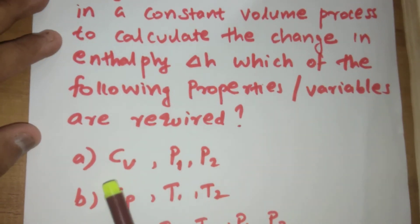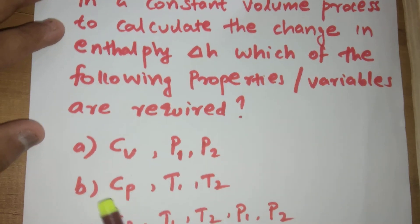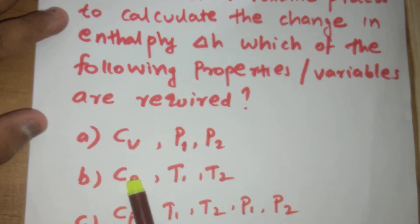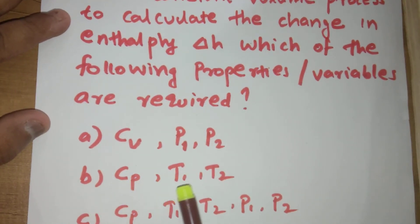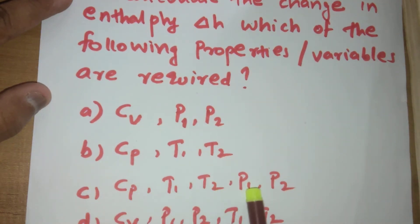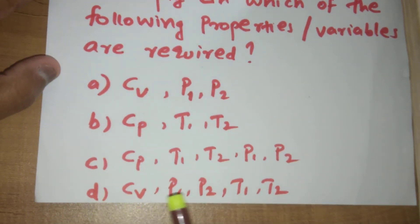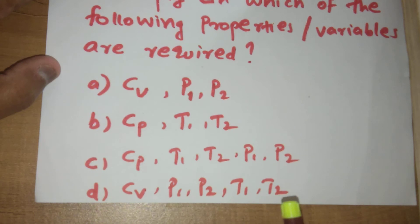Option A: CV, P1, P2. Option B: CP, T1, T2. Option C: CP, T1, T2, P1, P2. Option D: CV, P1, P2, T1, T2.